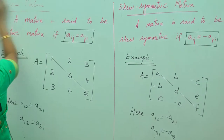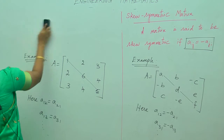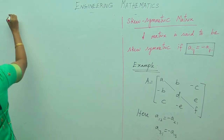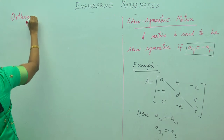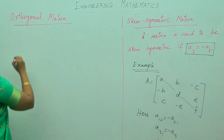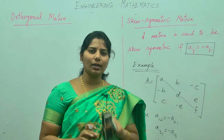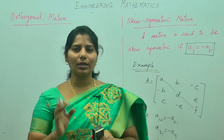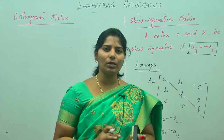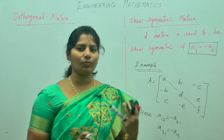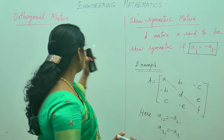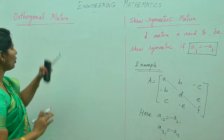Next is orthogonal matrix. In an orthogonal matrix, the transpose of the matrix is equal to the inverse. The transpose is found by interchanging rows and columns. The inverse is the adjoint of A divided by the determinant of A. When the transpose of A equals the inverse of A, we say it is an orthogonal matrix.